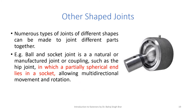Numerous detachable joints can be designed and developed to join different types of components together. One example is the ball and socket joint, which is a naturally occurring joint or coupling — such as a hip joint — in which a partially spherical end lies in a socket, allowing multidirectional movement and rotation. This type of joint is found in the hips and shoulders.